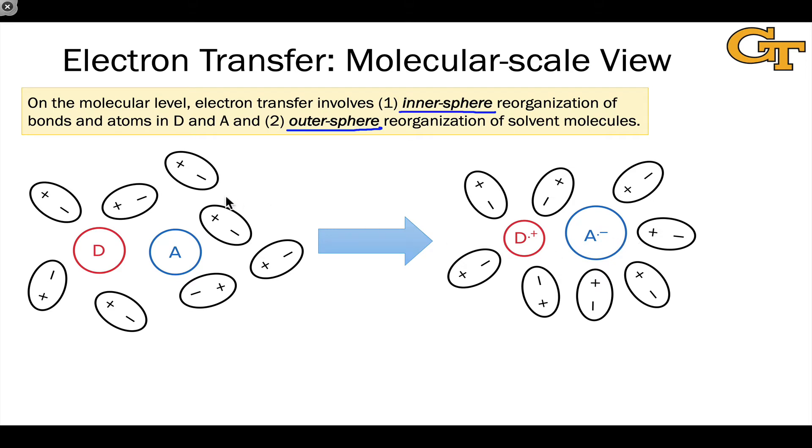At the same time, the solvent molecules in black are reorganizing themselves so that the negative ends of their dipoles point toward D dot plus and the positive ends point toward A dot minus.